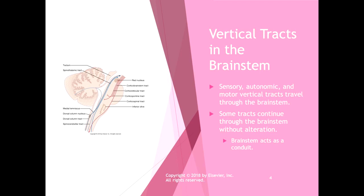There are sensory, autonomic, and motor vertical tracts that travel through the brainstem. Some tracts continue straight through without alteration — the brainstem acts as a conduit. Because of that, if you have an injury to the brainstem, it's going to affect a lot of things, because signals are not being transmitted from the cerebrum to the periphery or vice versa.